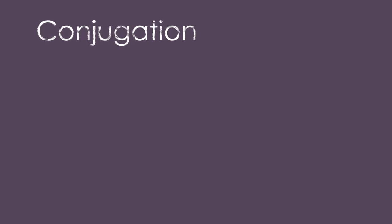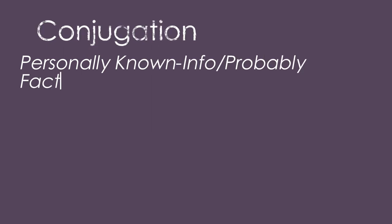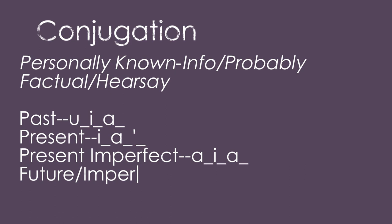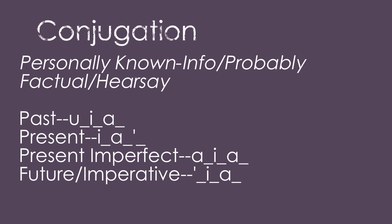Next, if you know the information personally, or if this is hearsay, or if you just think it's probably true, then you conjugate like this: in the past, it is irshas; in the present, it is irashas; in the present imperfect, you get arshas; and in the future or the imperative, it's shas.